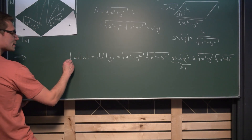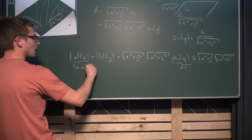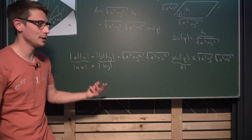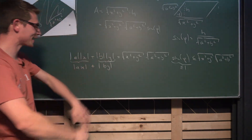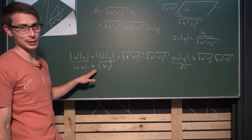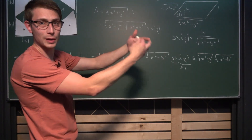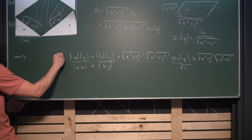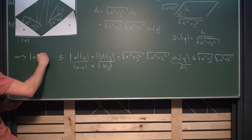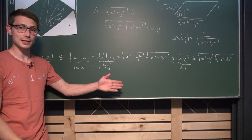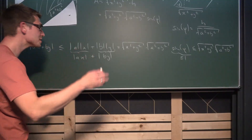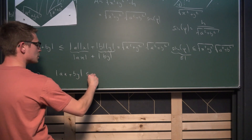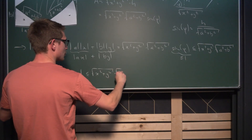The cool thing about absolute values is that they are multiplicative. This right here is the same as the absolute value of ax plus the absolute value of by. If you've ever done analysis, you might have been strangled by the triangle inequality. This right here is obviously the upper bound of the triangle inequality — detours are always greater than or equal to the direct path. This is what the triangle inequality basically says. So this right here gives us a new order relationship: the absolute value of ax plus by is less than or equal to the square root of x squared plus y squared times the square root of a squared plus b squared.